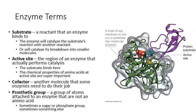Some enzymes have cofactors that they need — just another molecule that has to also bind to the enzyme before it can perform catalysis. If an enzyme needs a cofactor, it's not going to work unless it has that cofactor around. A lot of cofactors are actually vitamins that we get in our diet. Not every enzyme needs a cofactor; some don't need them at all, while some won't work without theirs.